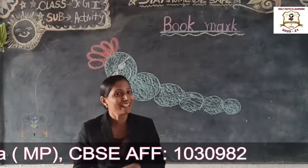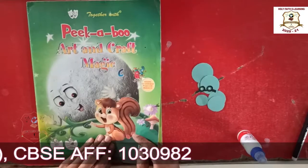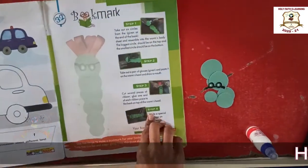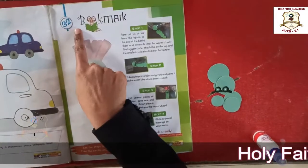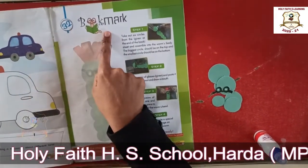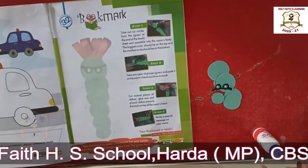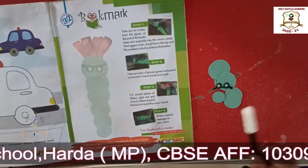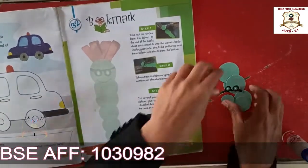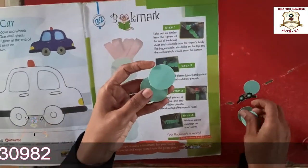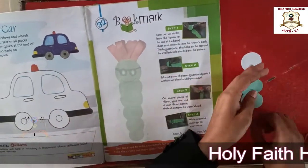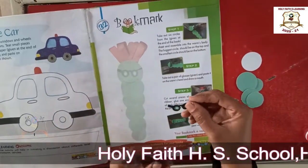Enjoy your activity, students! This is your item — the craft book. Open chapter number 32, Bookmarks. For this activity, we need a popsicle stick, a black sketch pen, and some cut paper. You can see the paper on the back side — we have already cut it.